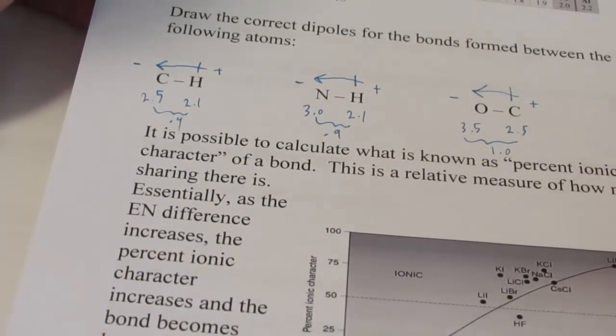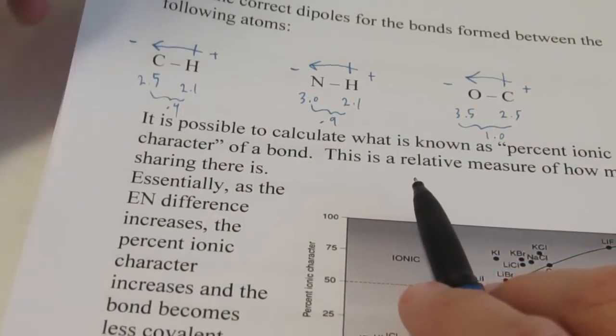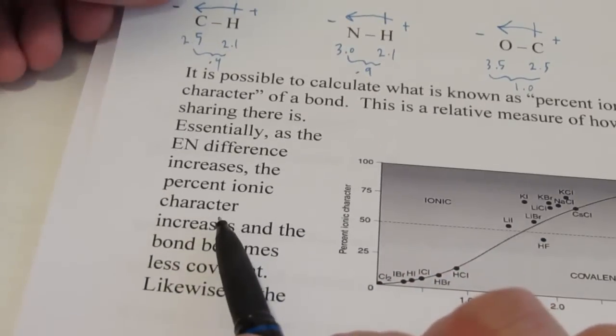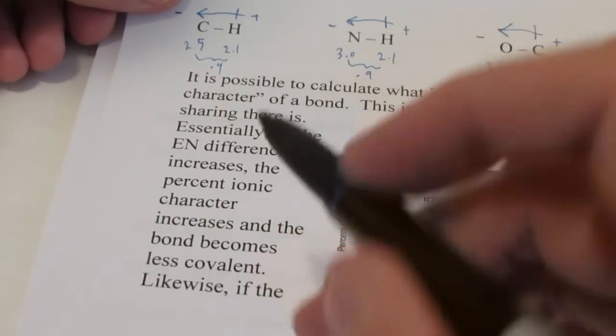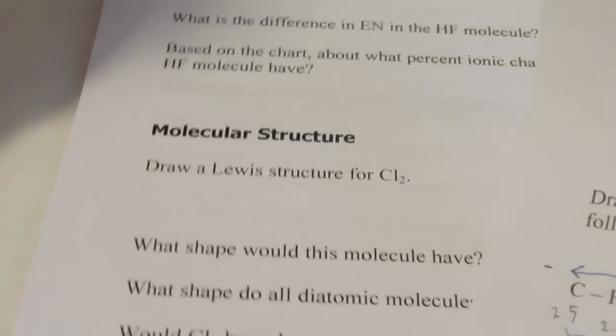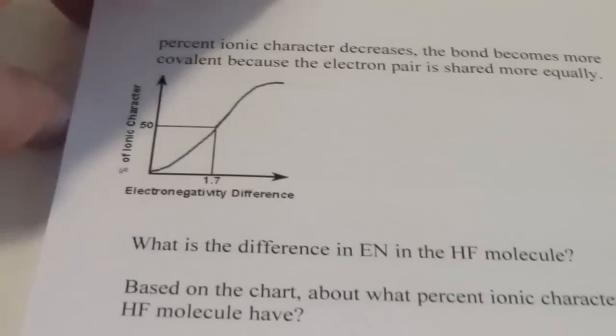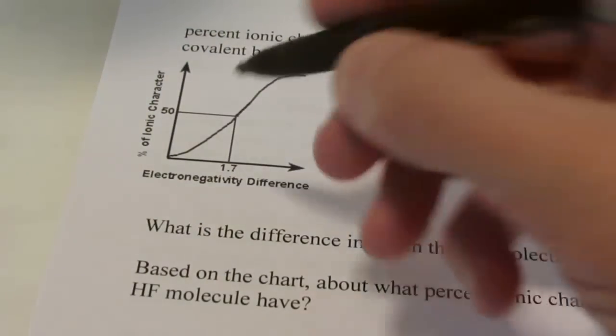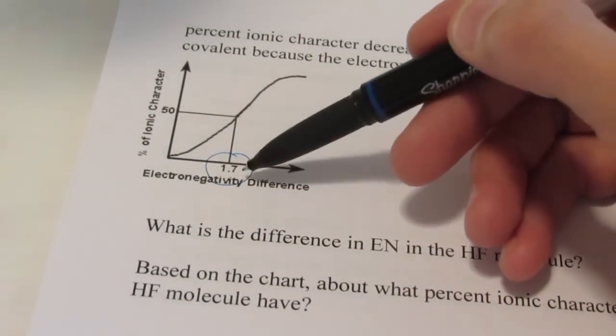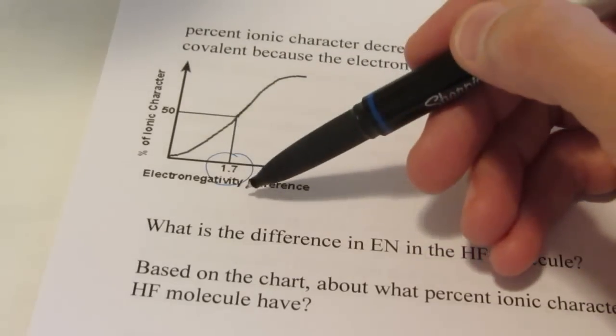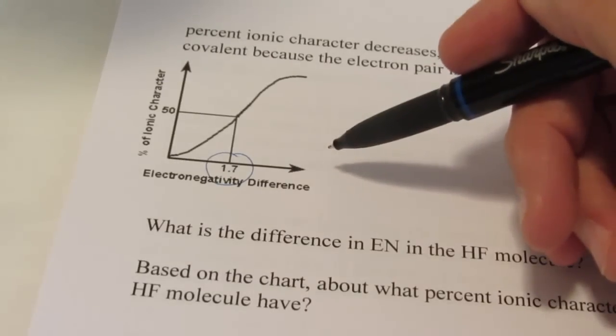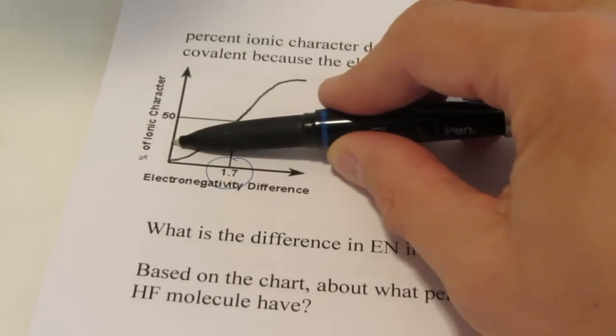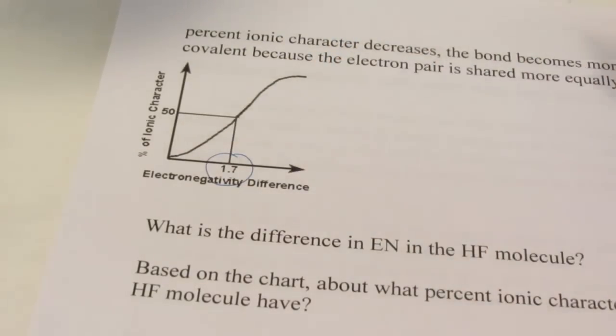Now, it's possible to calculate what is known as percent ionic character of a bond. This is a relative measure of how much sharing there is. Essentially, as the electronegativity difference increases, the percent ionic character increases, because there's less sharing, there's more of a transfer, and the bond becomes less covalent. Likewise, if the percent ionic character decreases, the bond becomes more covalent, and the electron pair is shared more equally. The breaking point here is about 1.7. If the difference is 1.7 or greater, the percent ionic character is above 50%, and we would call that an ionic bond. If the electronegativity difference is less than 1.7, then its percent ionic character would be less than 50%, and we would classify it as a covalent bond.